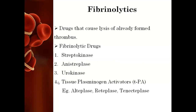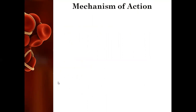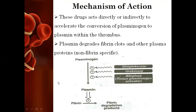The fibrinolytic drugs include streptokinase, anistreplase, urokinase, and tissue plasminogen activators — examples of this category are alteplase, reteplase, and tenecteplase. We will begin with the common mechanism of action. The mechanism of these drugs is that they directly or indirectly cause conversion of plasminogen to plasmin. On activation, this plasmin causes the breaking down or lysis of the fibrin material so that fibrin degradation products are liberated.